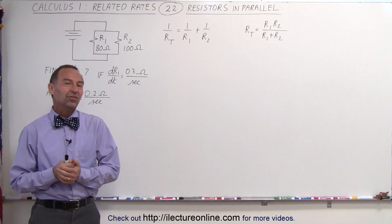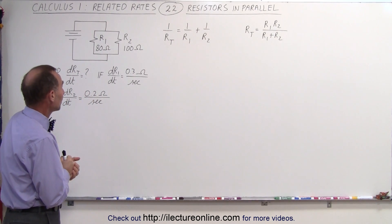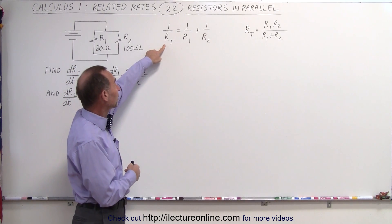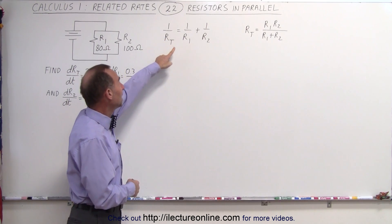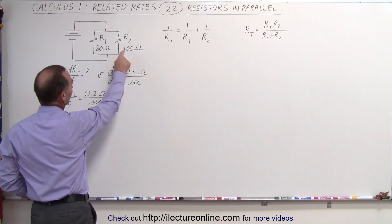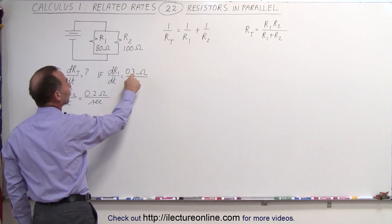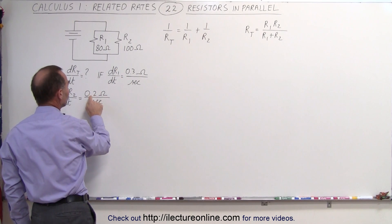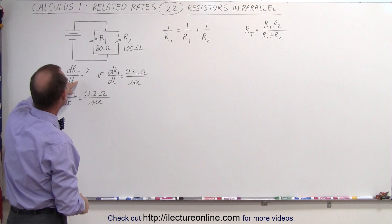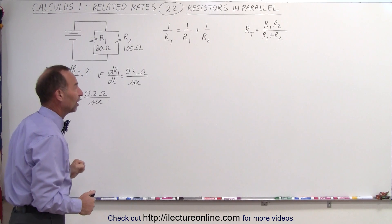Welcome to iLikeTurnLine. Now let's try a related rates problem on parallel resistors. We know the total resistance can be expressed as 1 over R_total equals 1 over R1 plus 1 over R2. The two resistors R1 and R2 are 80 ohms and 100 ohms, changing at 0.3 ohms per second for R1 and 0.2 ohms per second for R2. The question is: find the rate of change of the total resistance with respect to time.